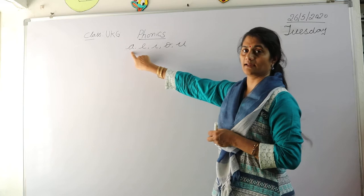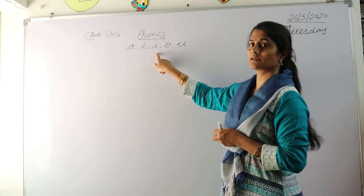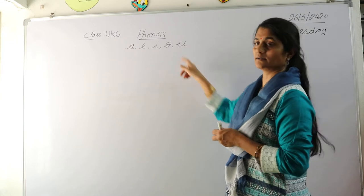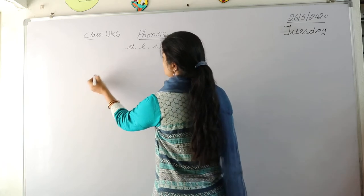A says A. E says E. I says E. O says O. And U says A. Now we have learnt some words yesterday with the letter sound A.